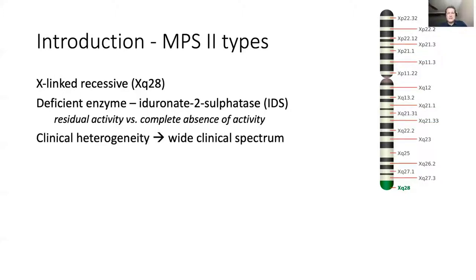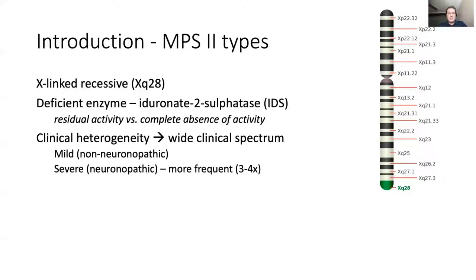MPS-2 is characterized by a wide clinical spectrum and wide clinical heterogeneity. We can see very mild phenotypes and high-functioning individuals, many intermediate forms, and then very severe phenotypes that start early — even in the first year of life. Those children usually progress very rapidly unless they are treated.